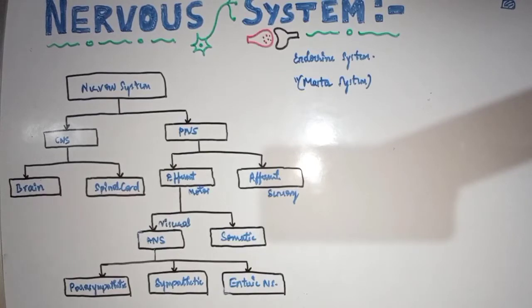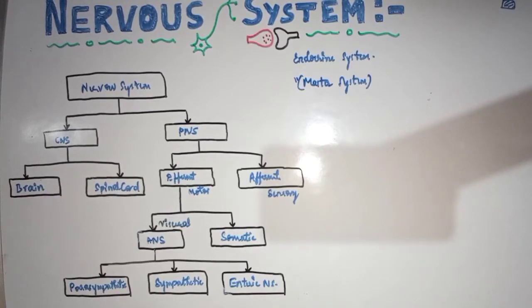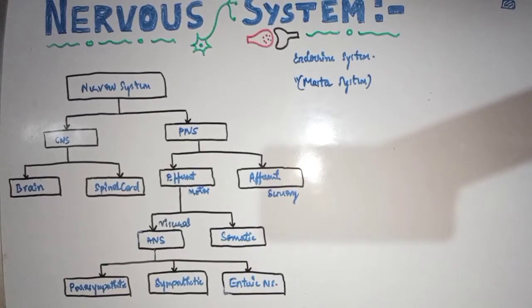The ANS supplies smooth muscles of the visceral organs, cardiac muscle (which is also involuntary), and glandular tissue. The autonomic nervous system supplies smooth muscles of visceral organs, cardiac muscles, and glandular tissue.